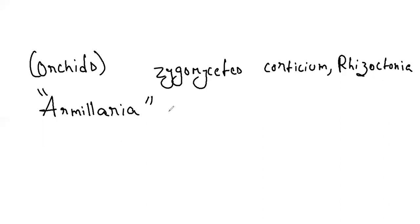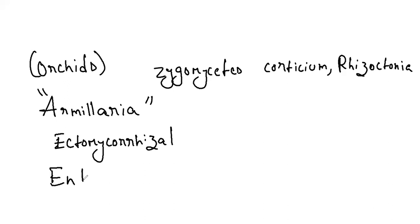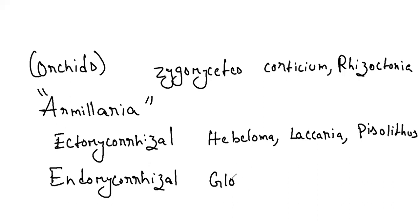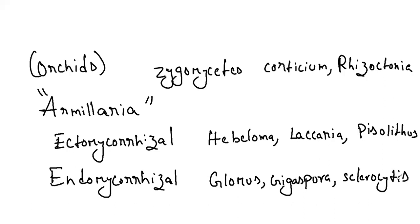Some ectomycorrhizal genera include Hebeloma, Laccaria, and Pisolithus. Endomycorrhizal genera include Glomus, Gigaspora, and Sclerocystis. These are the important things regarding mycorrhizae.